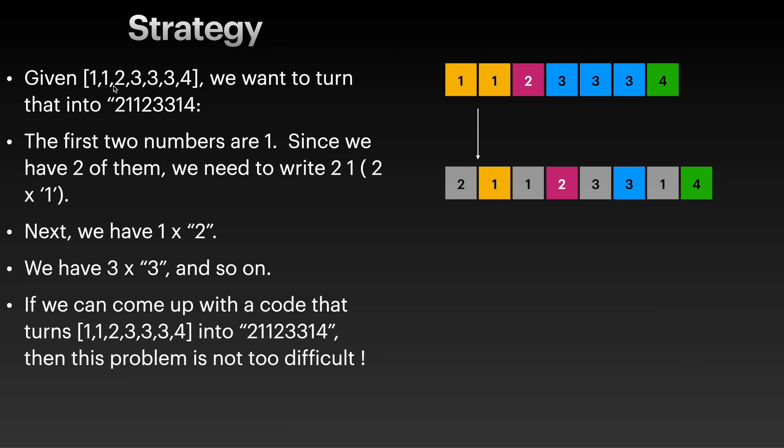So what do I mean by this? We have [1,1,2,3,3,3,4]. How many ones do we have here? We have two ones, right? So that's why you put 2 in front of 1. How many twos do we have? We have only one, so we have 1 and 2.